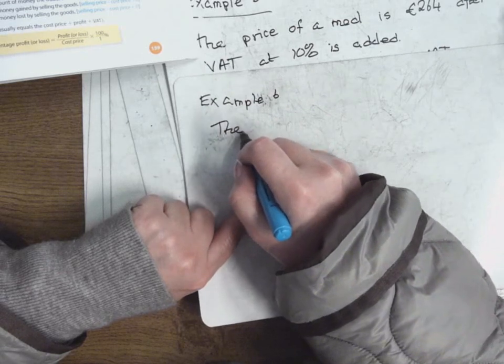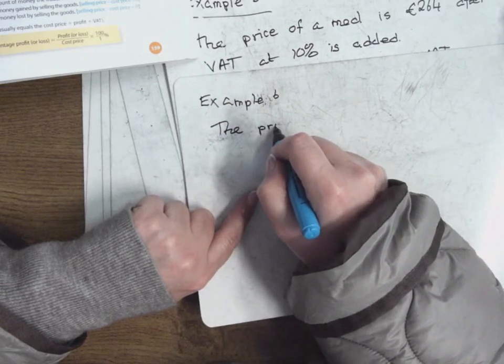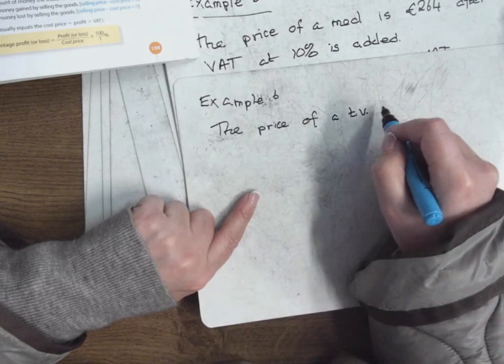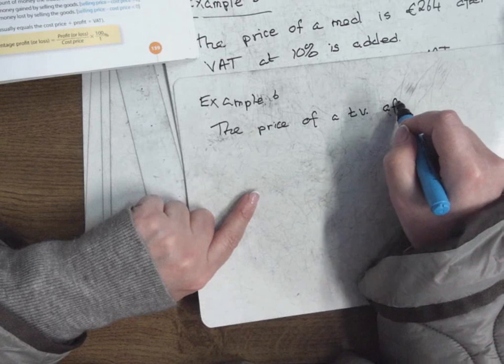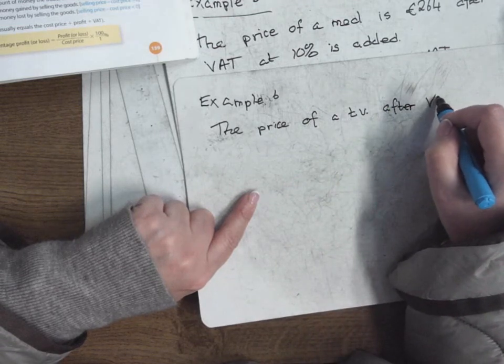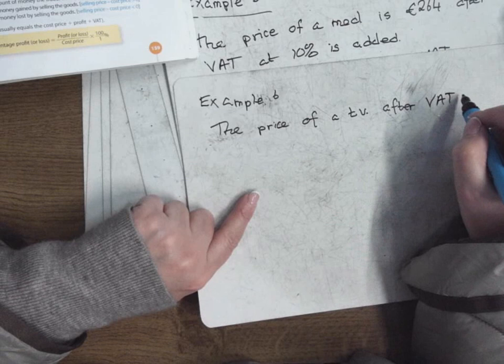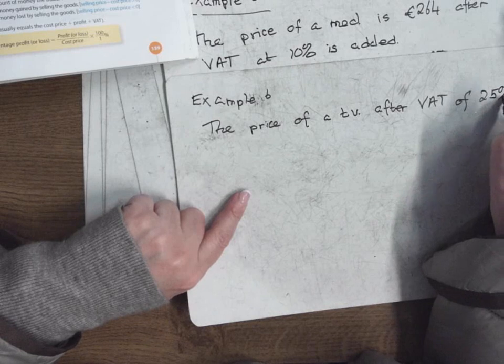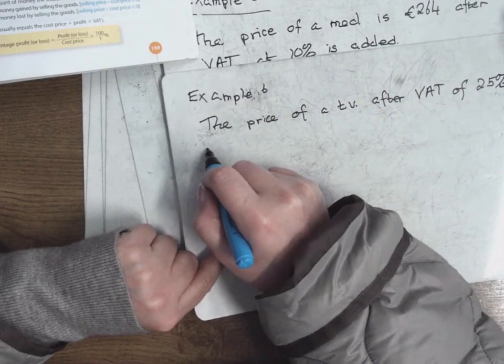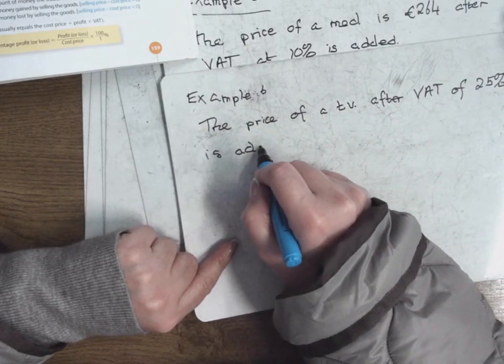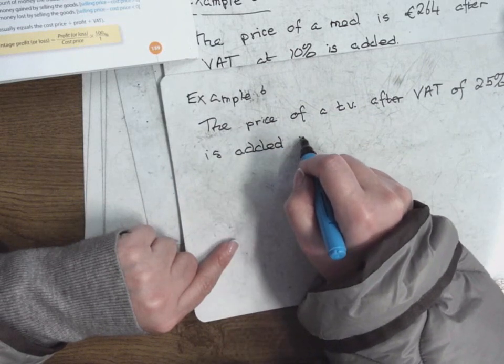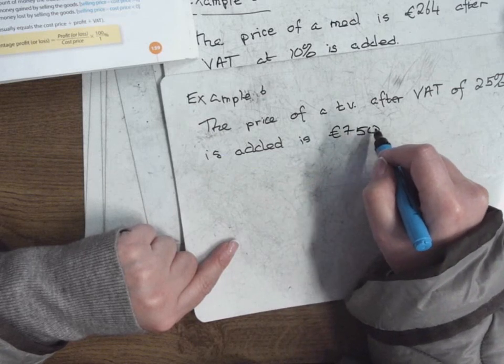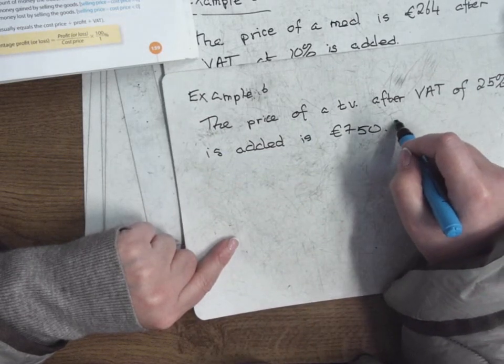The price of a TV after VAT is added, after VAT, €750. Find the price before VAT.